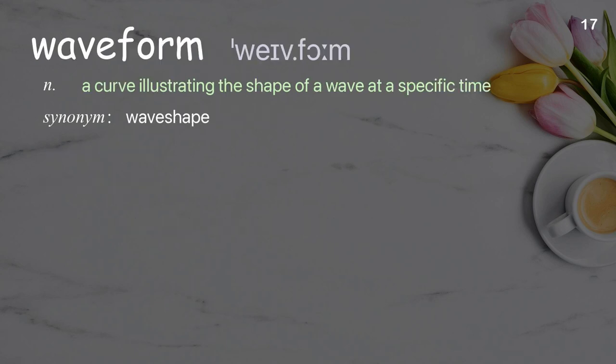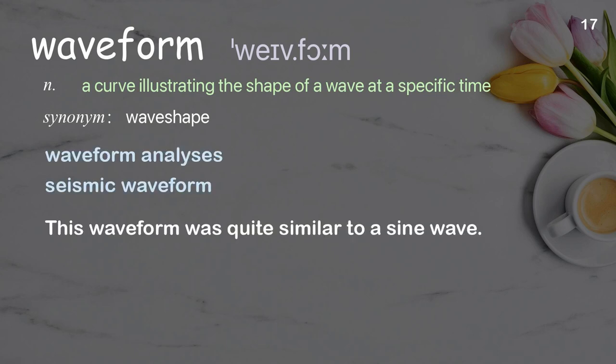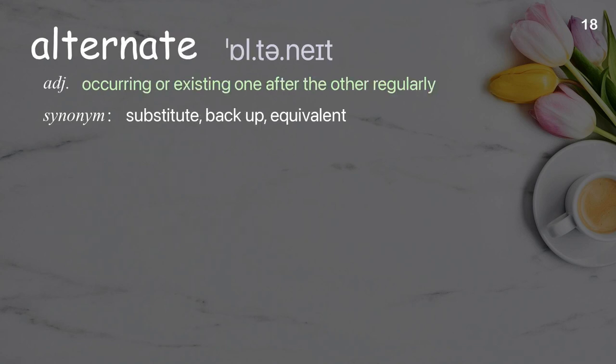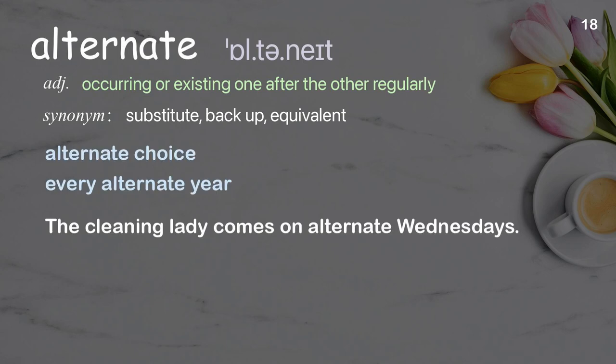Waveform: a curve illustrating the shape of a wave at a specific time. Examples: alternate choice, every alternate year. The cleaning lady comes on alternate Wednesdays.